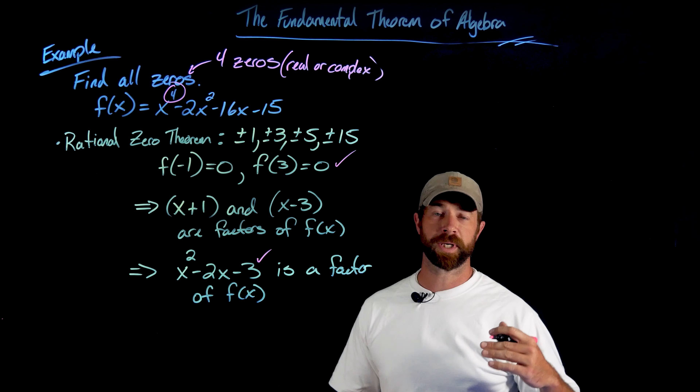We know this quadratic factor has zeros at x equals negative 1 and 3. Our job now is to find the zeros for x squared plus 2x plus 5 using the quadratic formula. That gives us negative b plus or minus the square root of b squared minus 4ac, all over 2a, which is negative 2 plus or minus the square root of 4 minus 20, all over 2. This discriminant becomes the square root of negative 16 over 2.